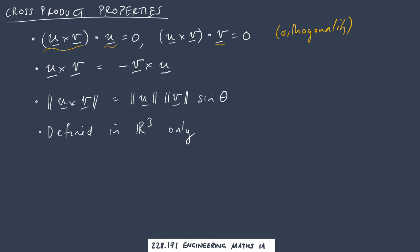Second one is that u cross v is equal to negative v cross u, so different direction depending on the order that you take. One will be positive, one will be negative.